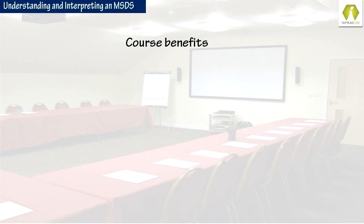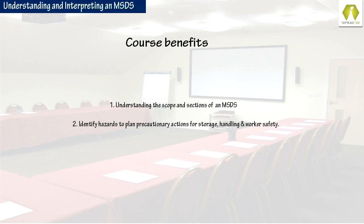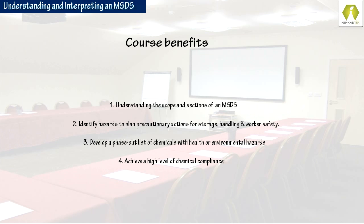At the end of this course, you will gain a thorough understanding of the scope and sections of an MSDS. You will be able to identify hazards in a chemical and plan precautionary actions for storage, handling, and worker safety. You can also develop a list of chemicals that need to be phased out if they have health or environmental hazards. In this way, you can achieve a higher level of chemical compliance.